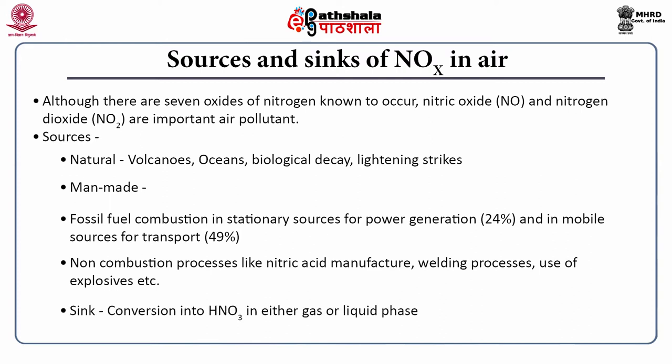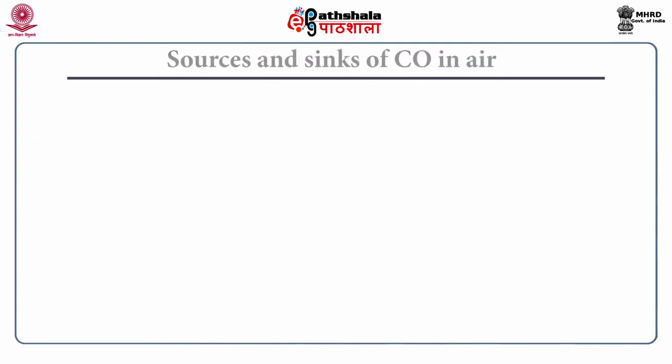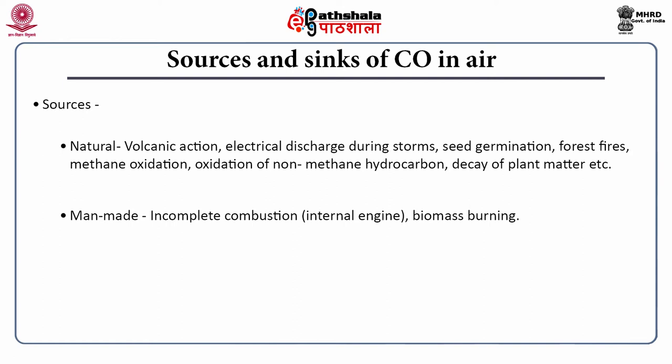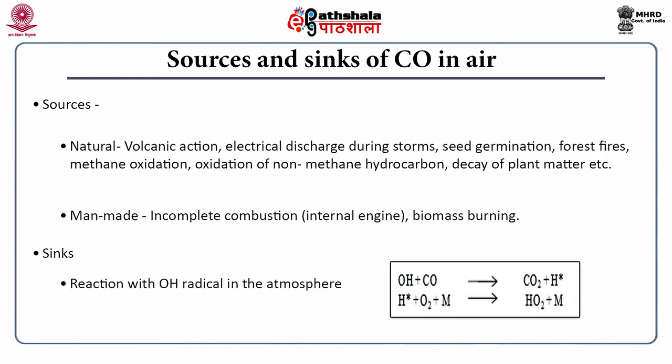The sink for NOx is conversion into HNO₃ in either gas or liquid phase. Sources and sinks of carbon monoxide in air: natural sources include volcanic action, electrical discharge during storms, seed germination, forest fires, methane oxidation, oxidation of non-methane hydrocarbons, and decay of plant matter. Incomplete combustion and biomass burning are the man-made sources. Sinks include reaction with hydroxyl radical in the atmosphere and removal by soil microorganisms.